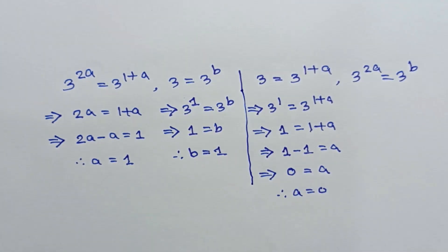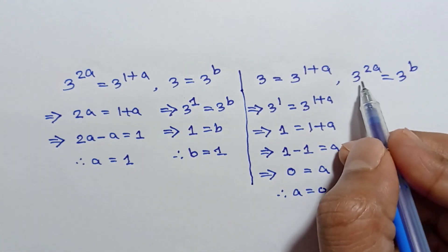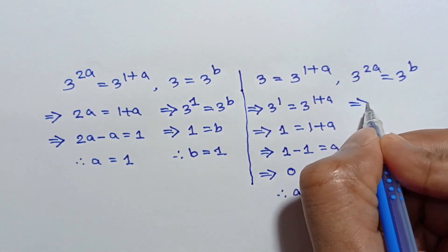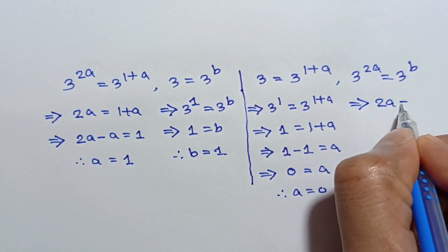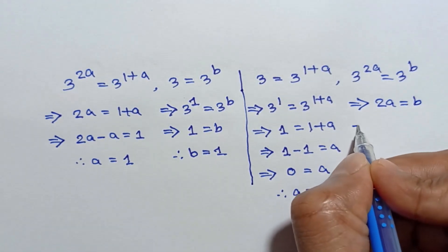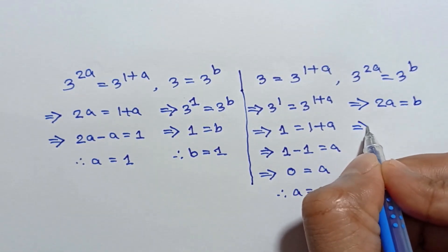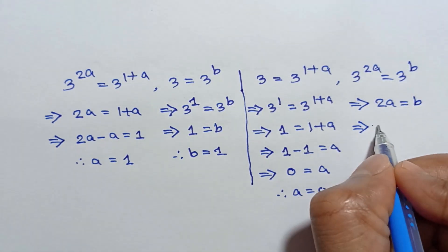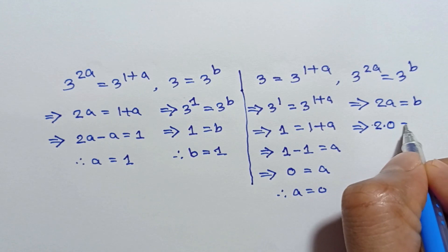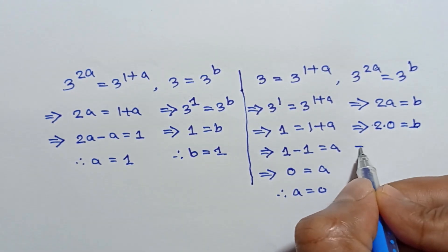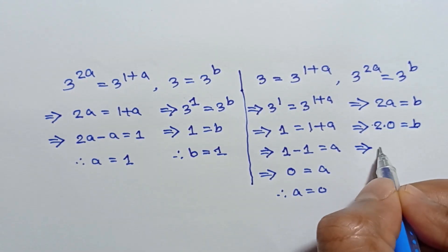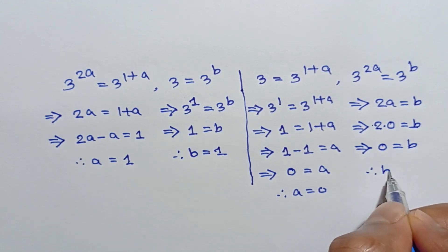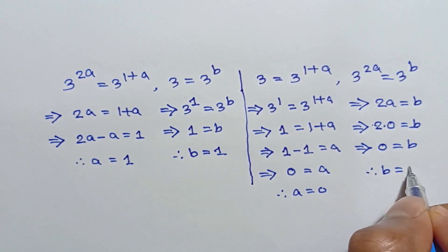And from here, the bases are the same so the power gives 2 times 0 is equal to b, and 2 times 0 is equal to 0, so the value of b is equal to 0.